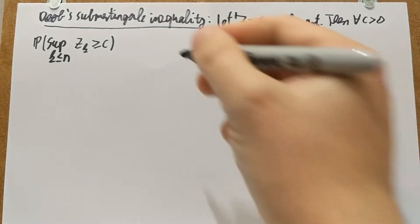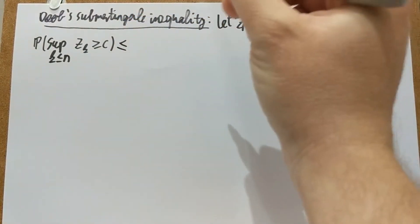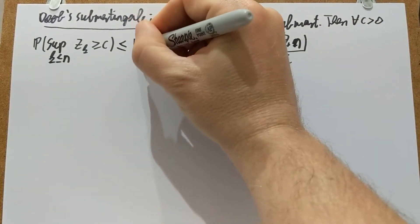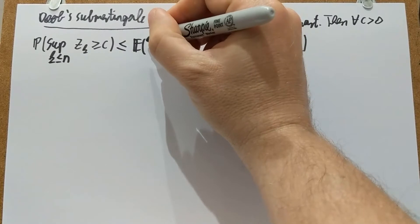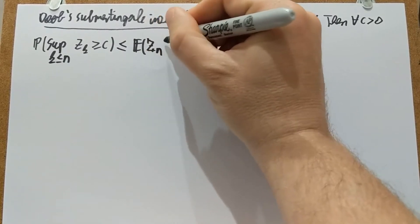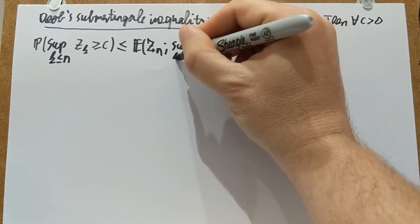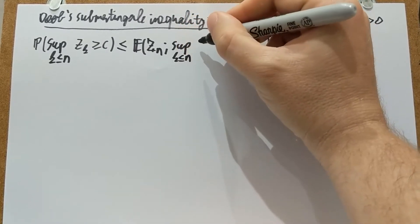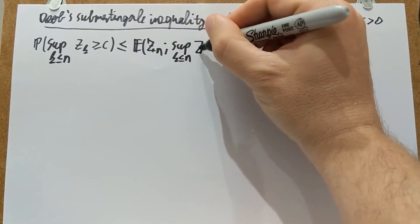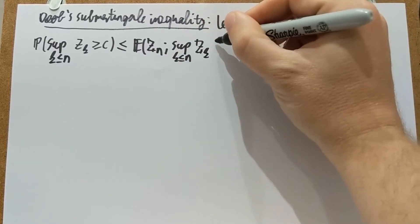I am actually going to prove something slightly stronger, but it's often not very much used. I'm actually going to put here Z_N on the event that the supremum of K, supremum in K of Z_K, is larger than or equal to C.